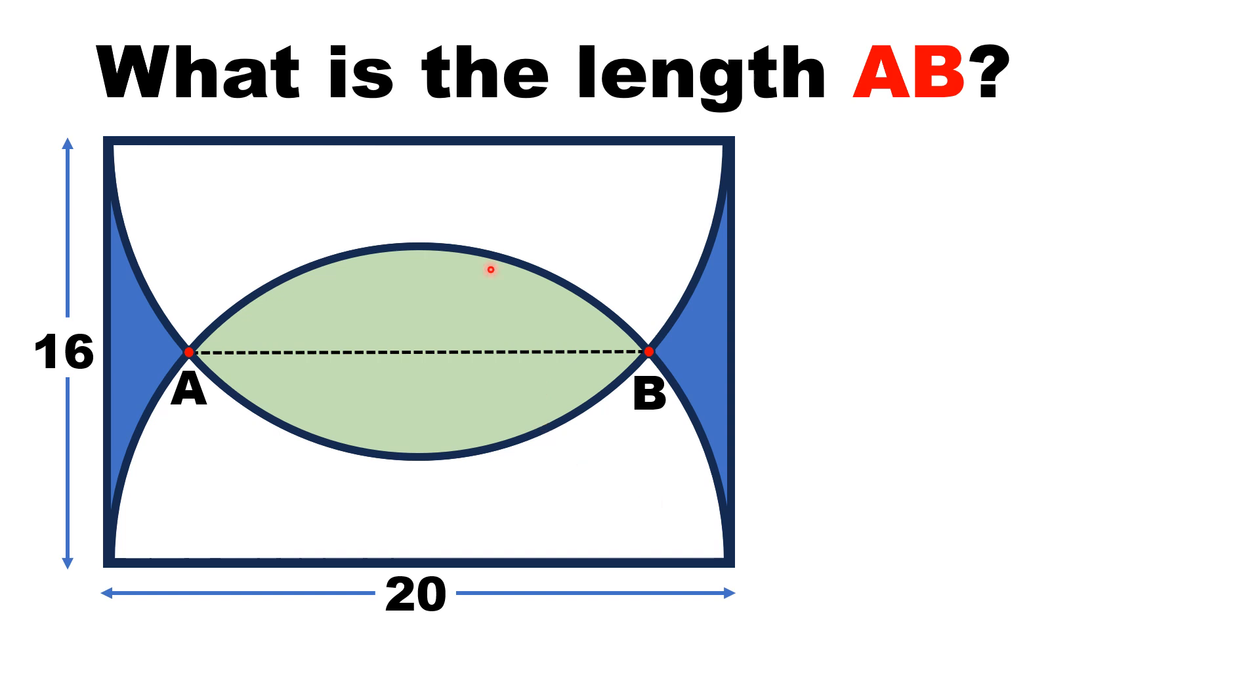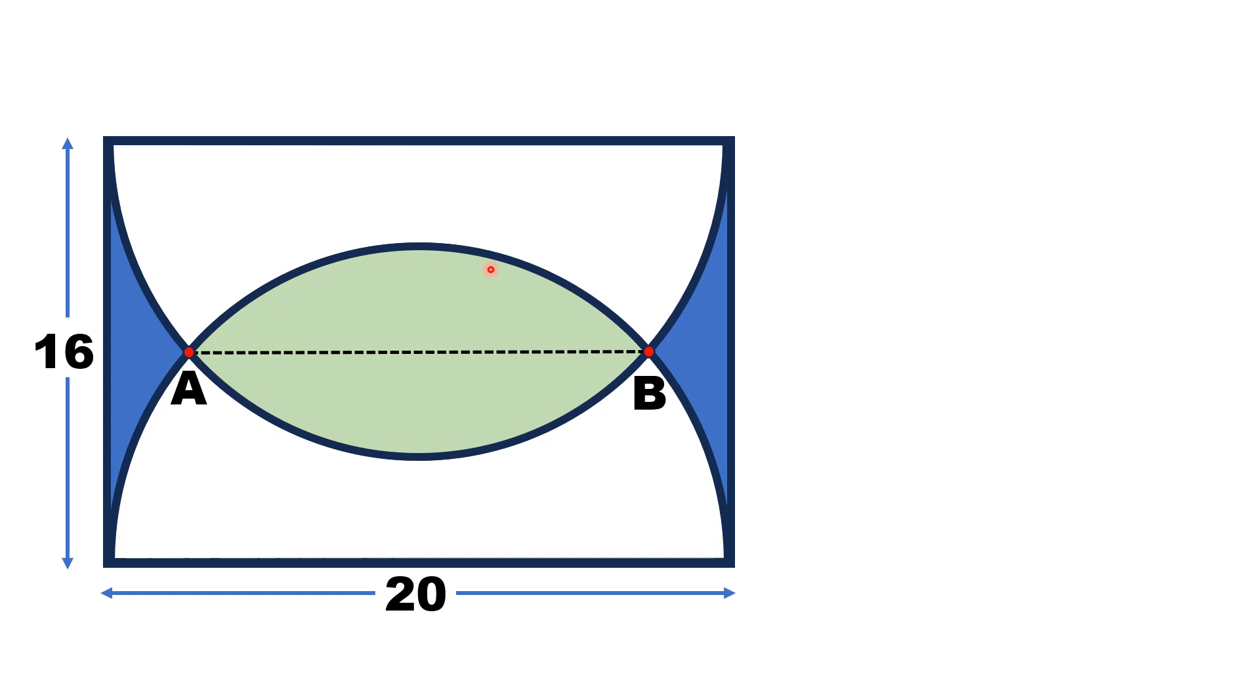Let's move towards the solution. First, we draw a line segment from the center of the semicircle to the intersecting point A.